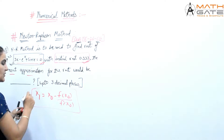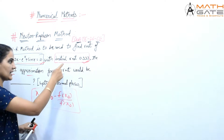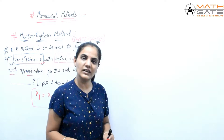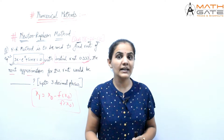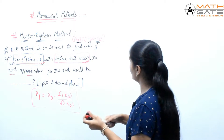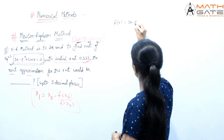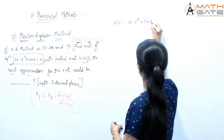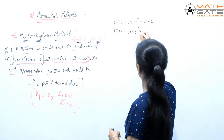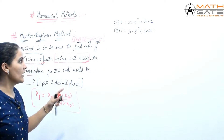We have already discussed this formula in our last video. In this formula, x1 needs to be found. x0 is given, the function is given — we will find the function value at the initial root, and the derivative of the function at the initial root. So f(x) = 3x minus e to the power x plus sin x. Therefore f'(x) = 3 minus e to the power x plus cos x.